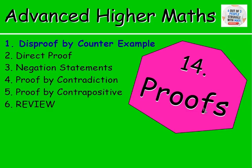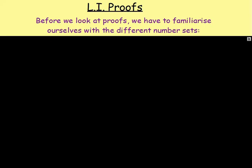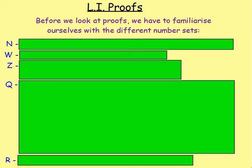Now before we start this proofs chapter, something that you have to be familiar with are the different number sets. This is something we have come across in the past — if you feel you're okay with it, feel free to skip this. But a quick reminder of N, W, Z, Q, and R.